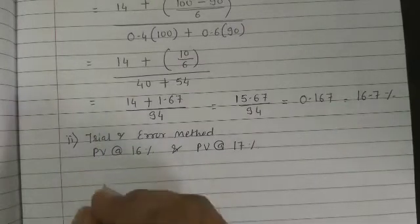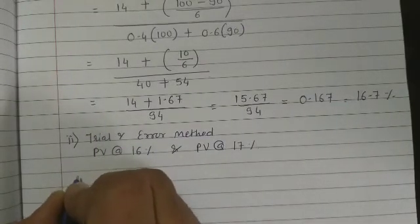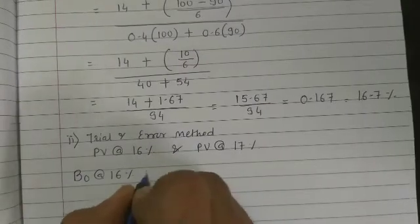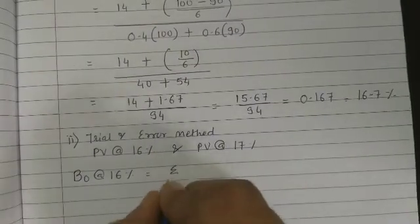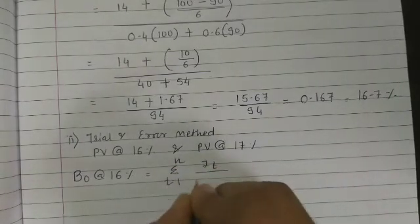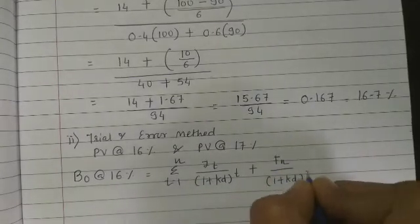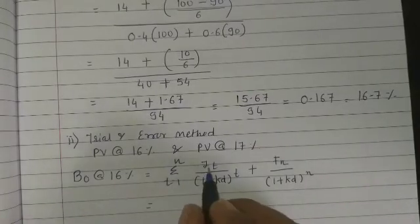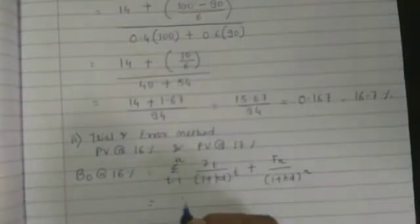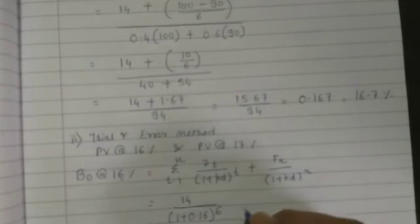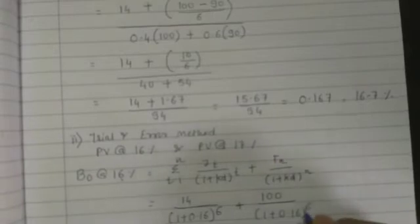Using the bond valuation formula: PV equals summation of I divided by (1 plus kd) raised to t, plus F divided by (1 plus kd) raised to n. At kd equals 16%, interest is 14 (calculated on face value). So: 14 divided by (1 plus 0.16) raised to 6, plus 100 divided by (1 plus 0.16) raised to 6.